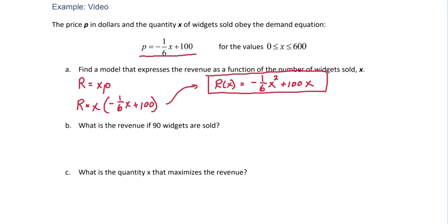Part b is asking what is the revenue if 90 widgets are sold. Here we're going to simply plug in 90 to our function. So negative one-sixth times 90 squared plus 100 times 90. If we throw that into our calculators, we will get $7,650.